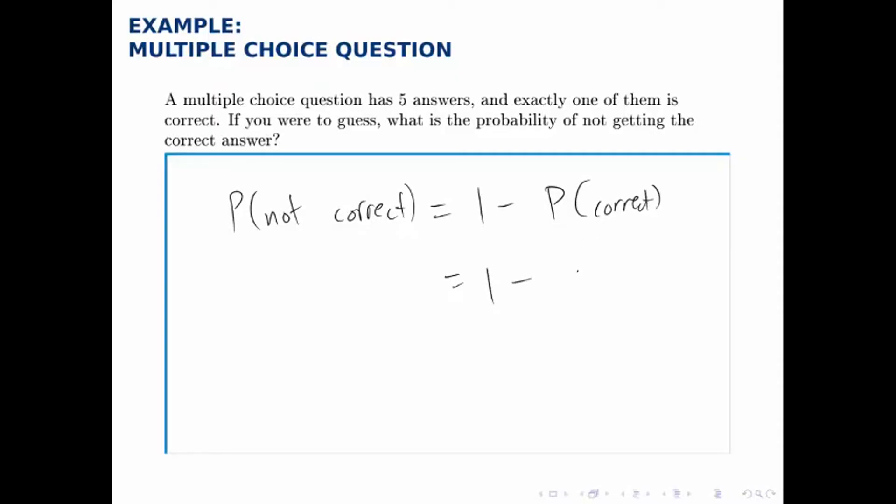Well, there are five total possibilities for what you could guess. One of them is correct, so 1 minus 1/5 is 4/5, so there's a 4/5 chance that you won't get the correct answer if you randomly guess.